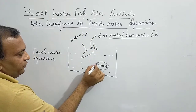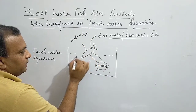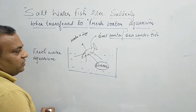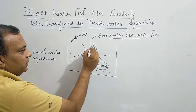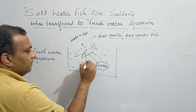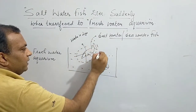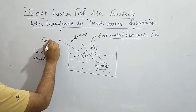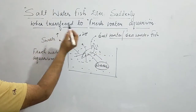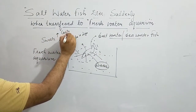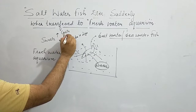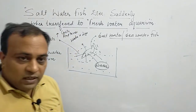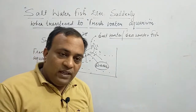Water enters into the body of the fish. Due to this, the fish swells, and ultimately its cells rupture. This condition is the result of osmosis.